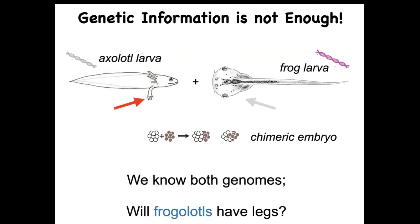Here is an extremely simple example of why genetic information is not enough. This is the larva of an axolotl — baby axolotls have little four legs. This is a tadpole, and baby frogs at this point do not have legs. In my lab, we can make something called a frogolotl — a chimeric embryo that's part axolotl cells, part frog cells. Both genomes have been sequenced, yet no existing model can go from that genomic information to predicting anatomy in a case like this.